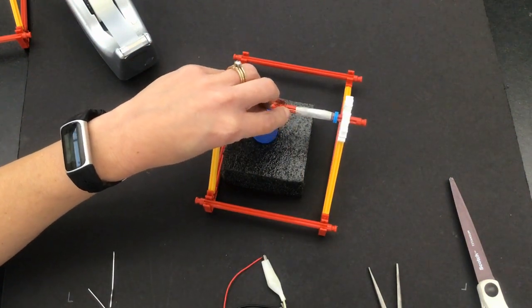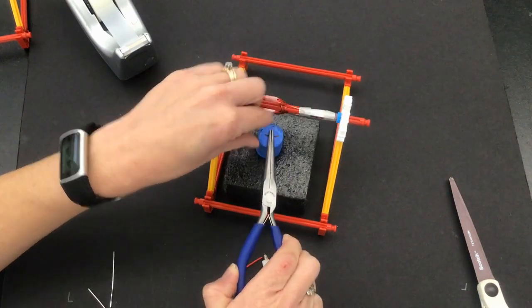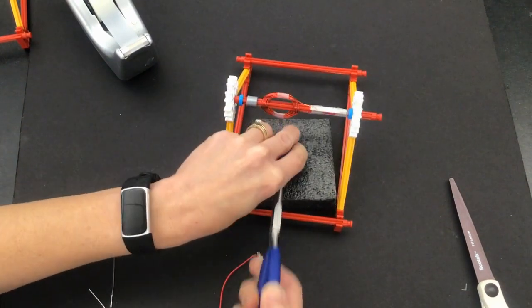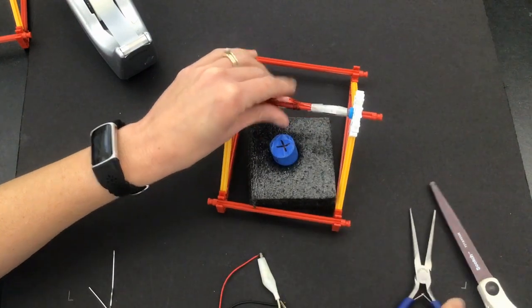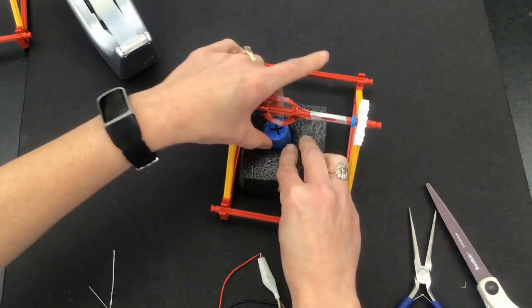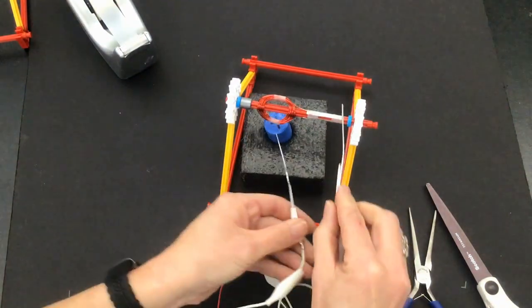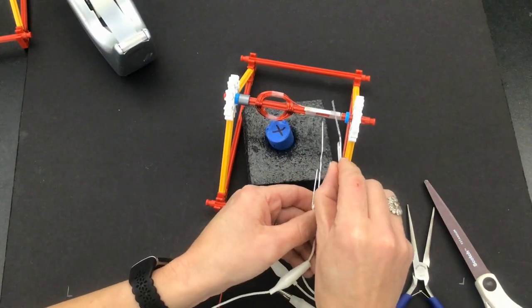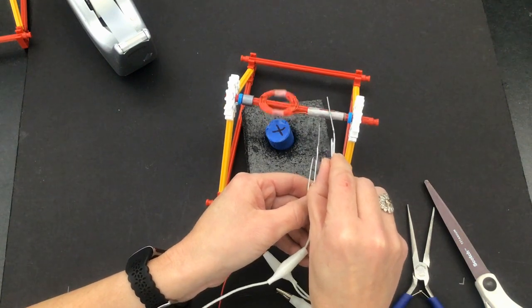It could be that you don't have a good enough connection between this metal—magnet—between this metal piece and your aluminum. It could be that this is not spinning freely. Look at this: if I have it down there, it doesn't work as well.